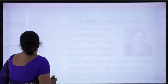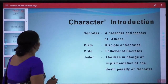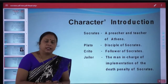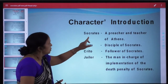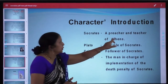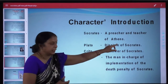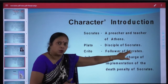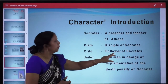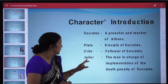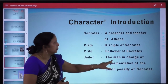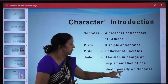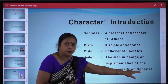Moving on students, let us meet the characters of the lesson Socrates. Socrates — a preacher and teacher of Athens. Plato — disciple of Socrates. Crito — follower of Socrates. Jailor — the man in charge of implementation of the death penalty of Socrates.